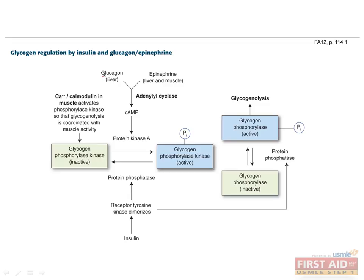In the unfed state, synthesis of glucagon and epinephrine is driven by low blood glucose. Both of these hormones cause activation of the enzyme adenylyl cyclase, which synthesizes cyclic AMP, which in turn activates protein kinase A. Protein kinase A phosphorylates its substrate — in this case, it phosphorylates the enzyme glycogen phosphorylase kinase, which is also a kinase.